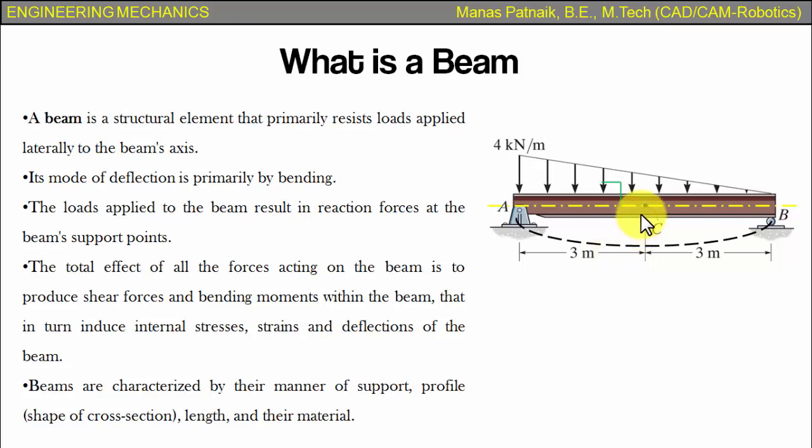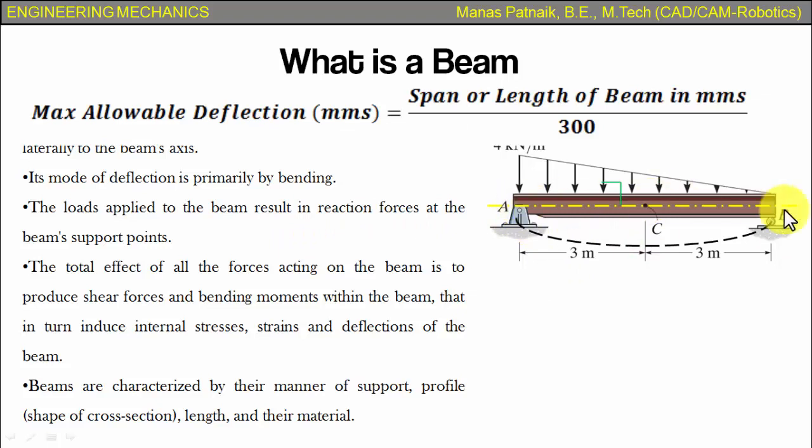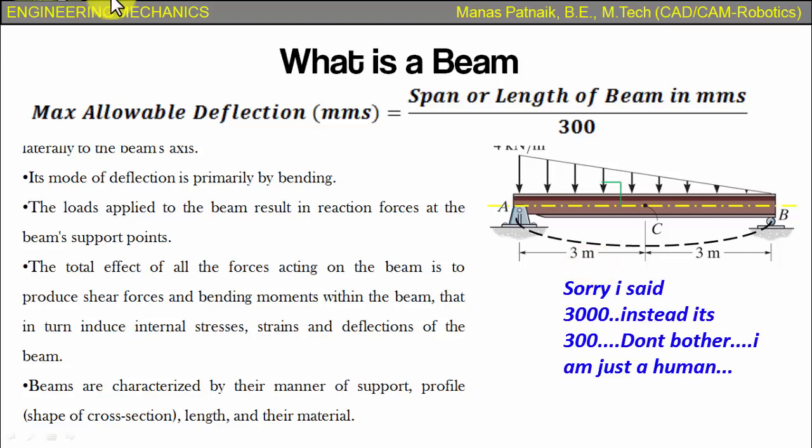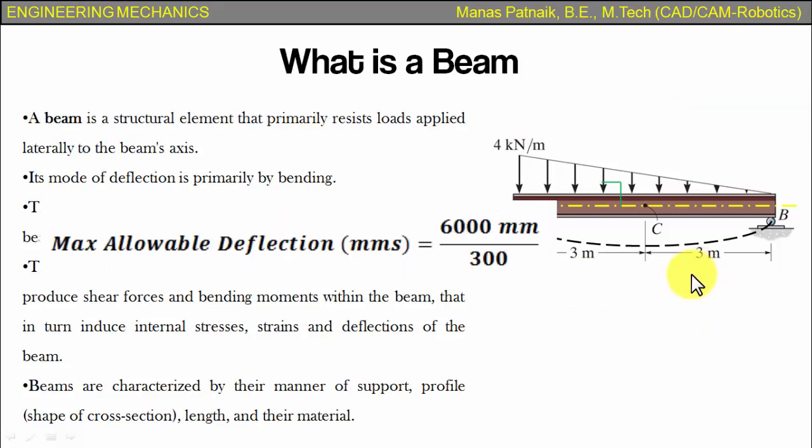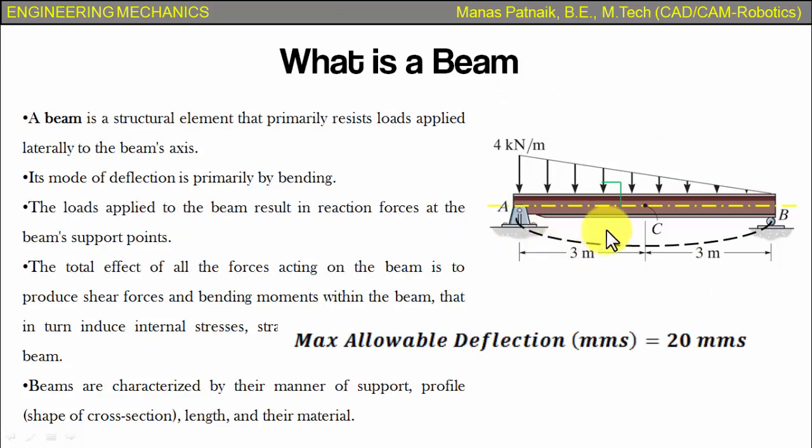What I am trying to say is that there is a limit to which the deflection can occur. Or you can note this, there is a maximum allowable deflection for any beam. Now let's say this beam is having a span length of 6 meters. So there is a formula. I think you should note this. The maximum allowable deflection is equal to span in millimeters divided by 300. So the span in this case is 3 plus 3, that is 6 meters. If you convert that in millimeters, you can get the value as 6000 millimeters. And when that is divided by 300, you will get the maximum allowable deflection as 20 millimeters.